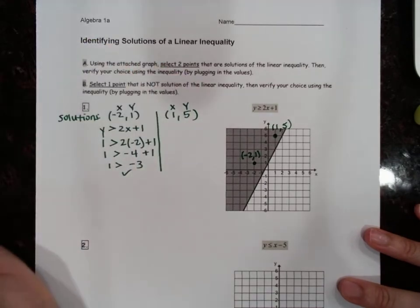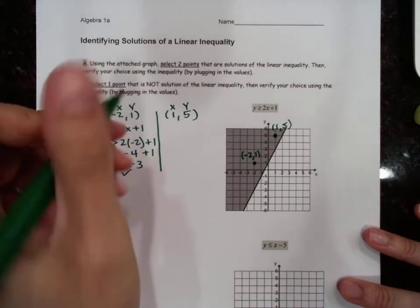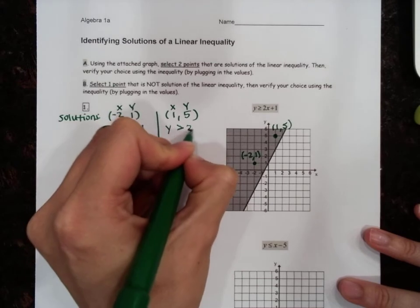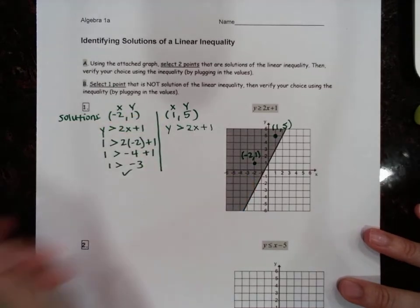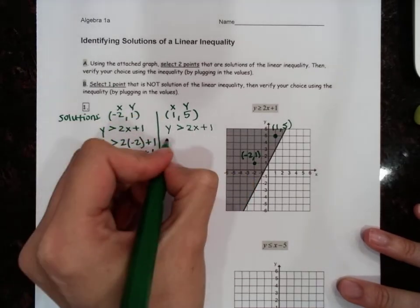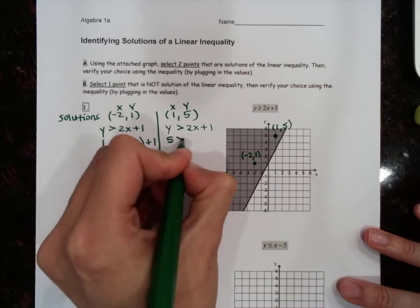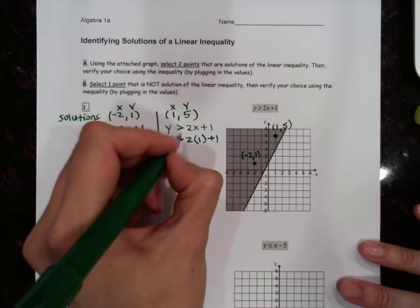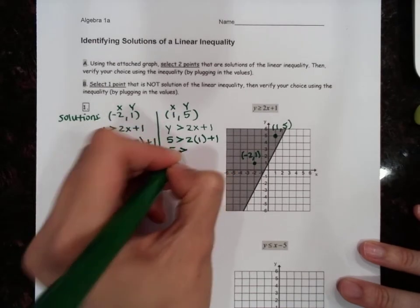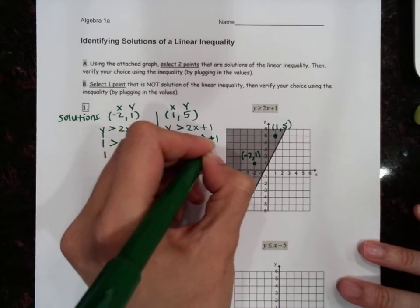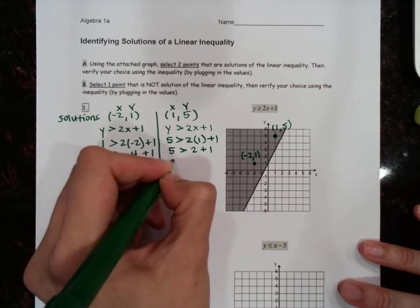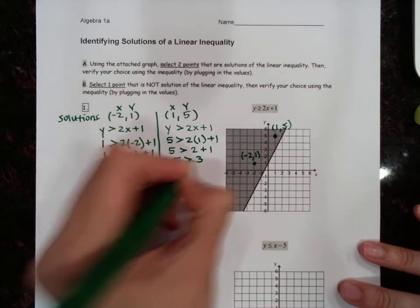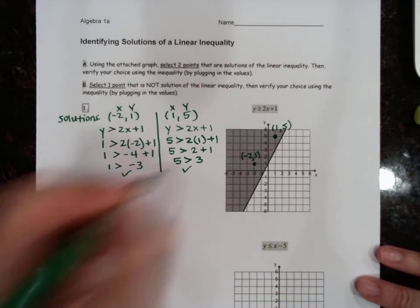Let's plug in 1 for x and 5 for y: is y greater than 2x plus 1? So we have 5 is greater than 2 times 1, which is 2, plus 1, which is 3. Is 5 greater than 3? Yes, it is.